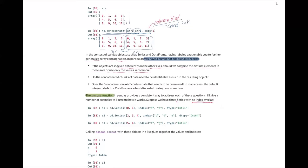In general, concatenation has several conditions: sometimes we have different indexes between the two axes, or concatenated chunks need to be identifiable, or axis data like column names or row index names need to be preserved. In those cases, we use the pandas concat function, which is similar to NumPy's concatenate.